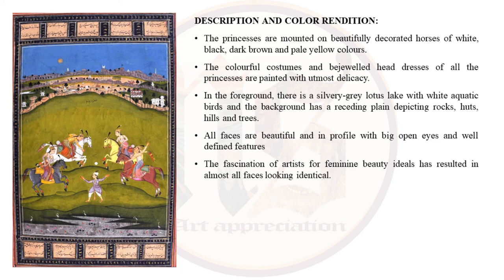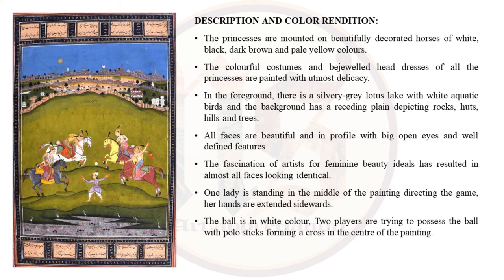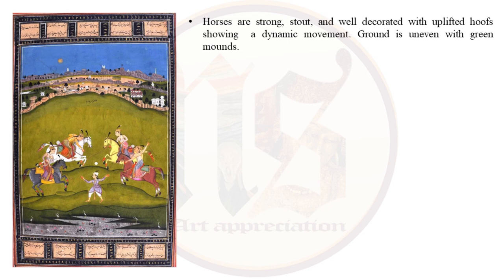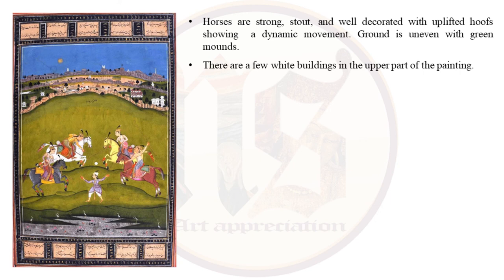One lady stands in the middle of the painting directing the game with her hands extended sidewards. The ball is white, and two players are trying to possess it with polo sticks forming a cross in the center. The horses are stout and strong, well decorated with uplifted hoofs showing dynamic movement. The ground is uneven with green mounds. There are a few white buildings in the upper part of the painting. There is a strong sense of depth and perspective — we see layers: the lake, green mounds, rocks and then the sky.